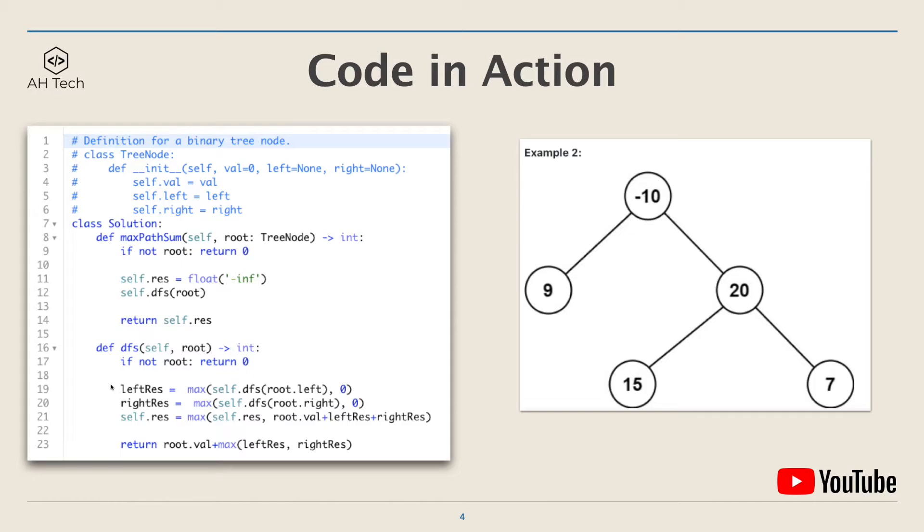And then perform a post-order traversal: get the result from left and right subtree first. And notice that we will take a maximum of the result of the left or right subtree to zero. And this means that if the result returned from the left or right subtree is negative, it won't contribute to the maximum path sum, so we will just exclude it from the path, which is flooring to zero.